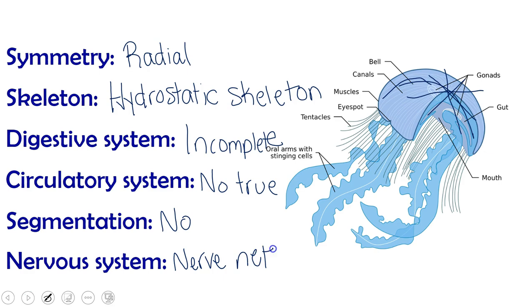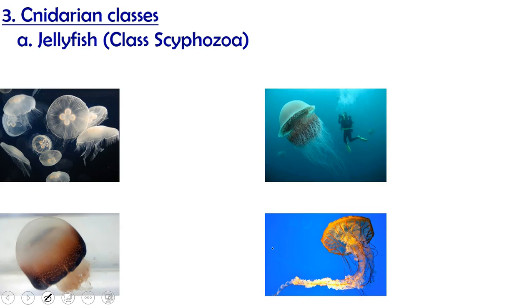So now let's look at our types of cnidarians. You don't need to know the class name for this, but if you want to, they're class Scyphozoa. And these are generally our jellyfish. I'm going to just point out a few that we would see here in Georgia. But before we do that, just know that our jellyfish, these guys are free swimming. And they are medusa for their whole lives.